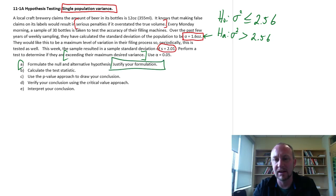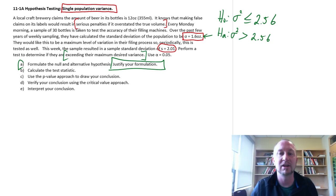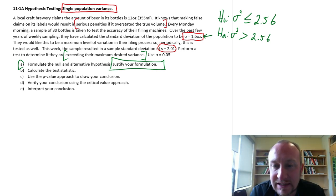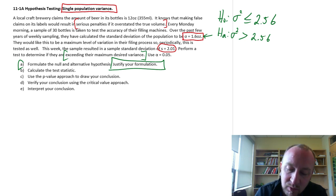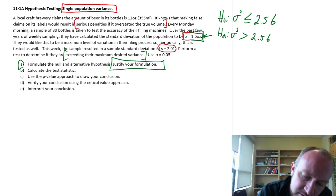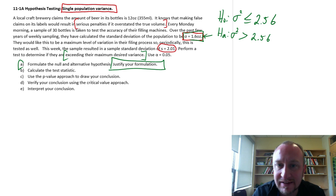If the evidence supports the null hypothesis then we are at most having a variance of 2.56 which is comparable to a standard deviation of 1.6. If the evidence supports the alternative hypothesis then that means that we are exceeding our targeted variance which is the same thing as saying we're exceeding our standard deviation, our targeted standard deviation.